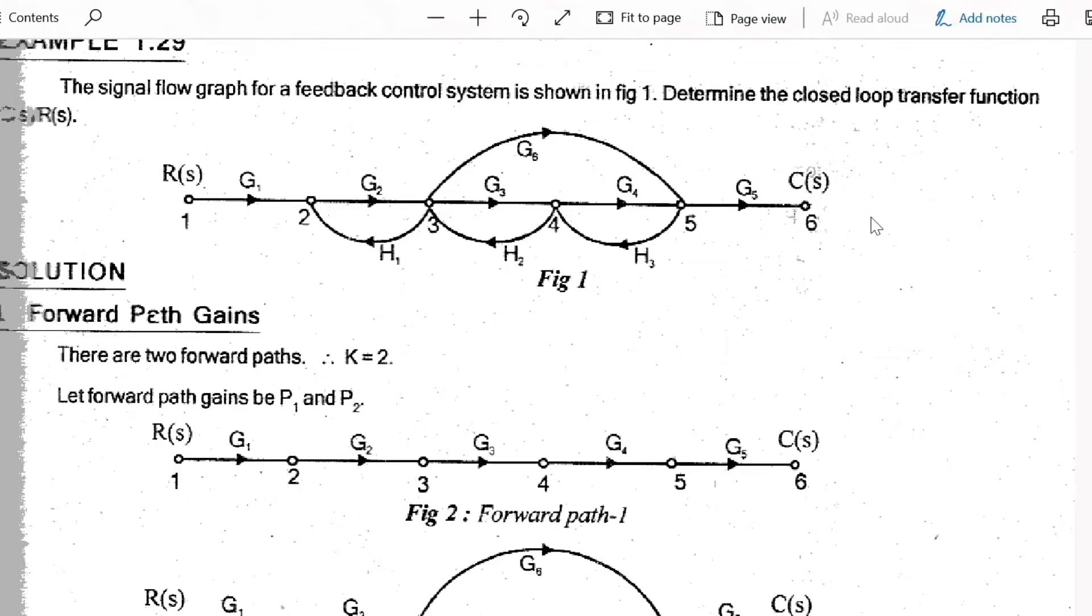The question gives us the signal flow graph for a feedback control system shown in the figure. Determine the closed loop transfer function C(s) by R(s). When they are giving a problem like this, the first step is to observe the nodes. Node numbers start from input to output, R(s) to C(s). In that aspect we have nodes 1, 2, 3, 4, 5, and 6.